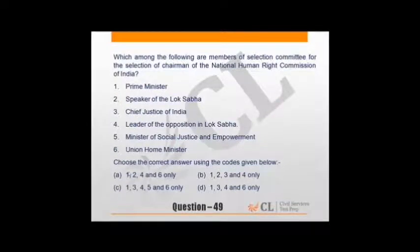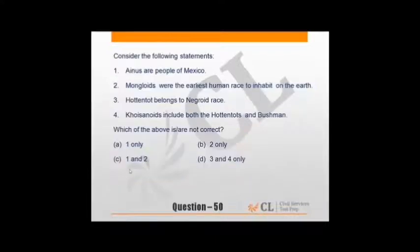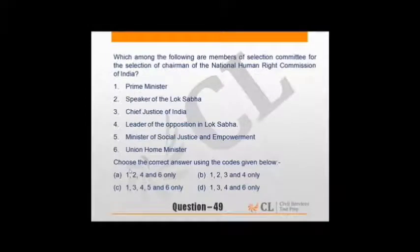Which among the following are members of selection committee for selection of chairman of National Human Rights Commission of India? Among them, if we see the answer: Prime Minister, Speaker of Lok Sabha, Deputy Chairman of Rajya Sabha, Leader of Opposition in Lok Sabha, Leader of Opposition in Rajya Sabha, and Union Home Minister. These six form the selection committee for Chairman of NHRC. You know, he must be a former Chief Justice of India. Among them, A option stands correct.